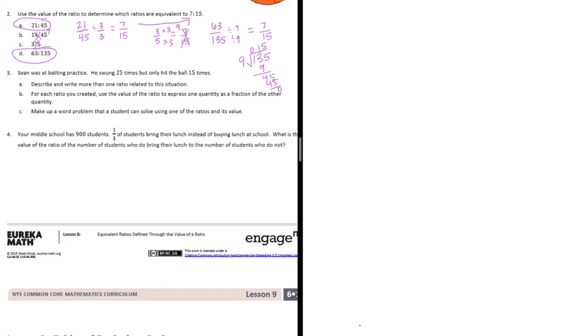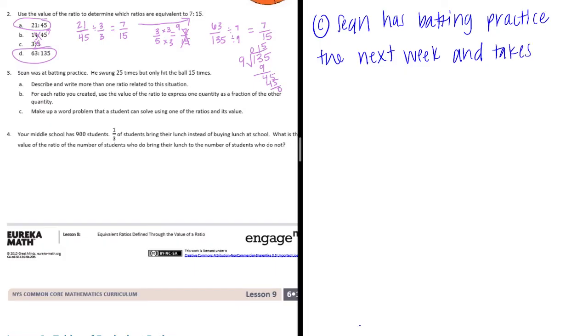So that the student can make up a word problem the student can solve using one of the ratios and its values. So let's say that Sean has batting practice the next week and takes 40 swings. Let's ask how many hits would he get if the ratio stays the same.